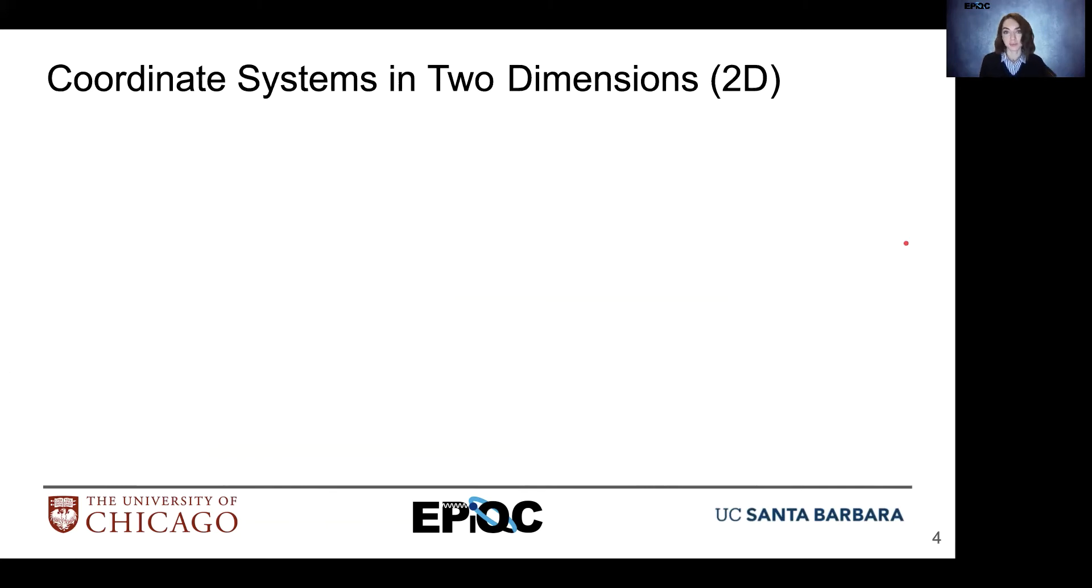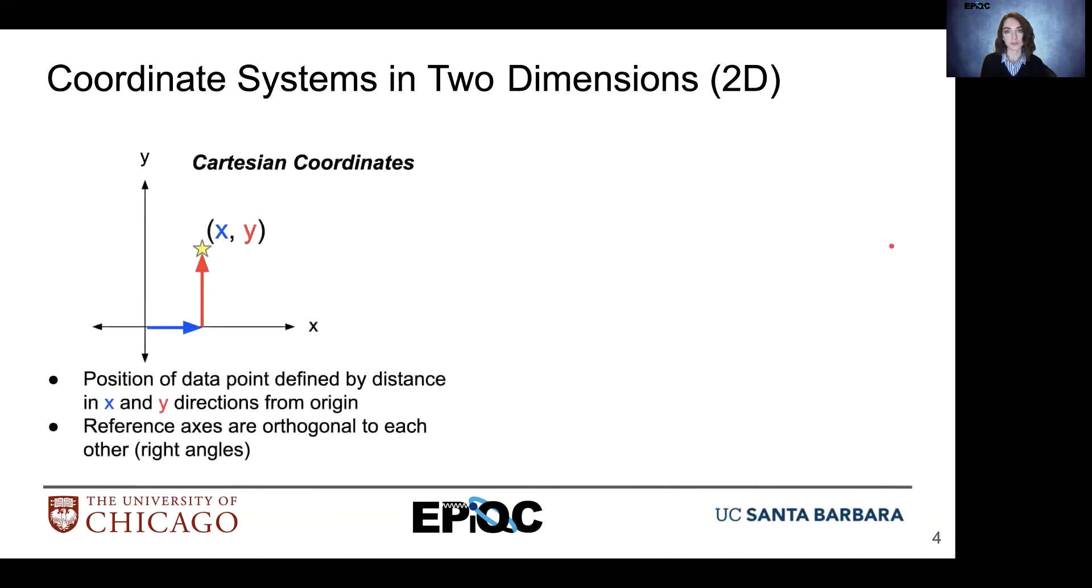Let's look at some coordinate systems in two dimensions. So first, we have Cartesian coordinates. We already looked at this with the xy-plane. So in Cartesian coordinates, we have two values. The value associated with the distance in the x direction, and the value associated with the distance in the y direction. So we look at these axes, and they're orthogonal to each other. And that means they intersect at right angles. And of course, that intersection is our origin.